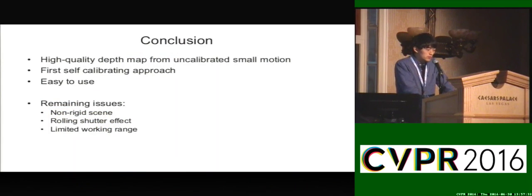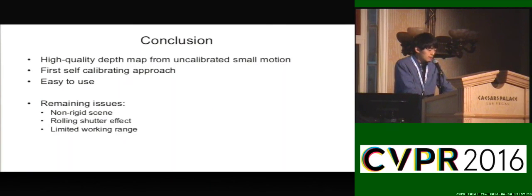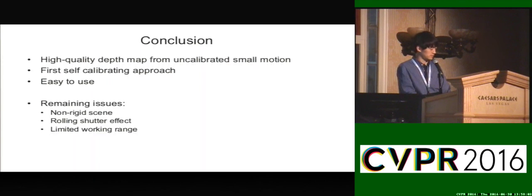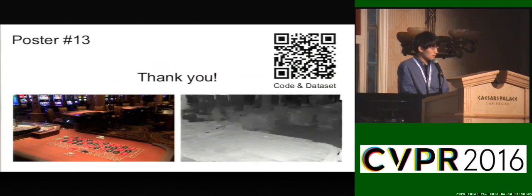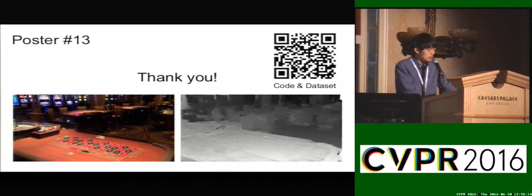In conclusion, we propose a new method to recover a high quality depth map from an uncalibrated small motion clip. It is the first self-calibrating approach for depth from small motion. By virtue of the self-calibration, it is easy to use and any modern cameras including smartphones can be utilized. There are some remaining issues such as non-rigid scenes, uncalibrated rolling shutter, and limited working range. Our code and dataset are available on our project website. For more information and discussion, please visit our poster. Thank you!